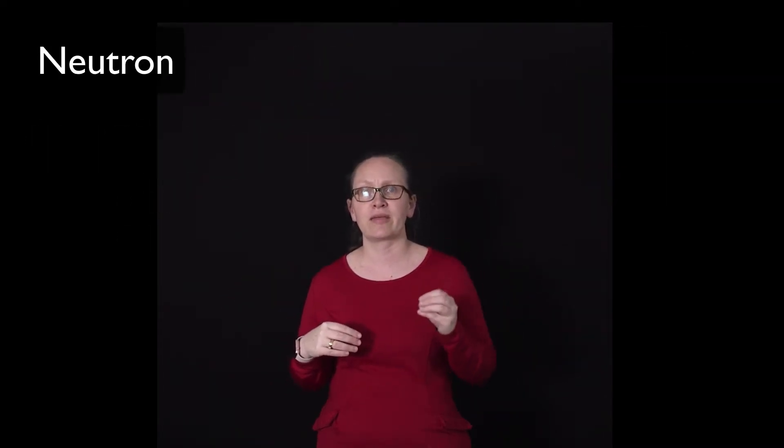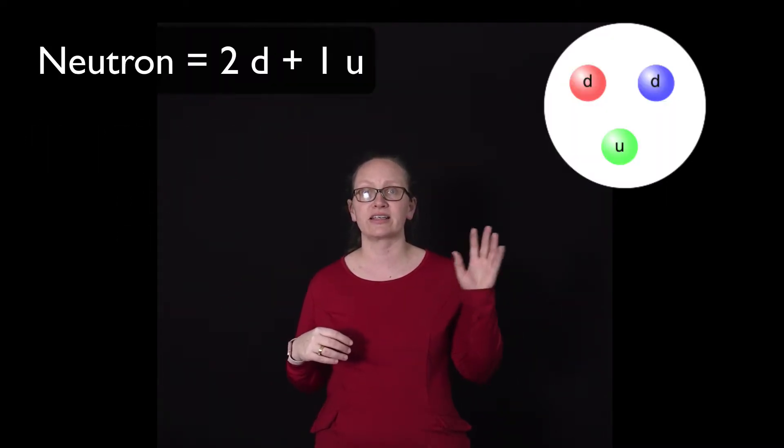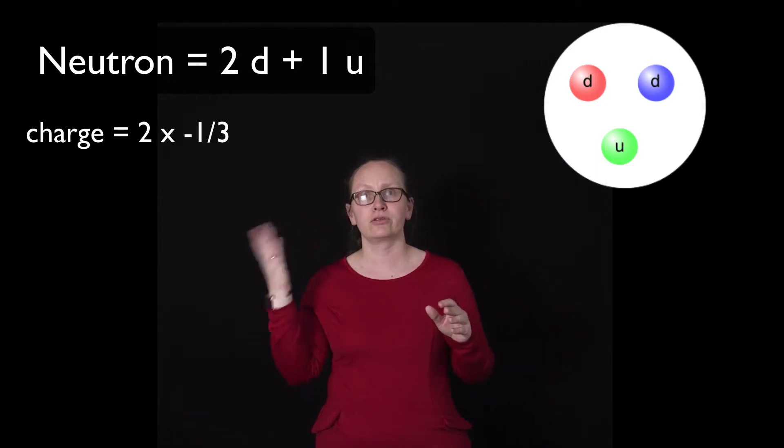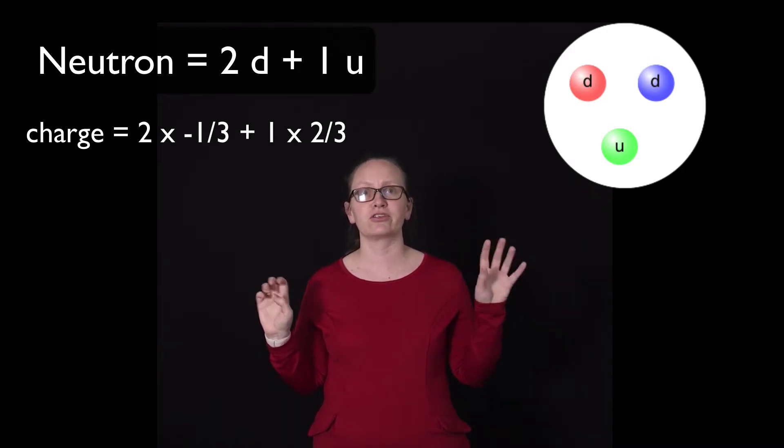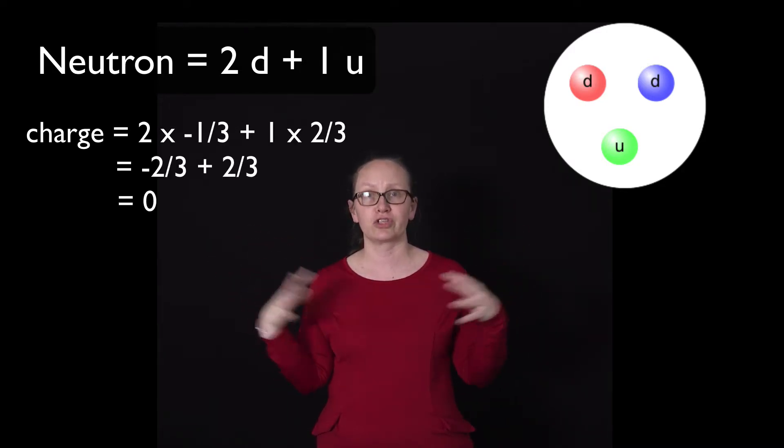The neutron is actually made up of two down quarks and an up quark. Two times minus one-third gives us minus two-thirds, and then the up quark has a charge of plus two-thirds, which gives us a neutral charge overall.